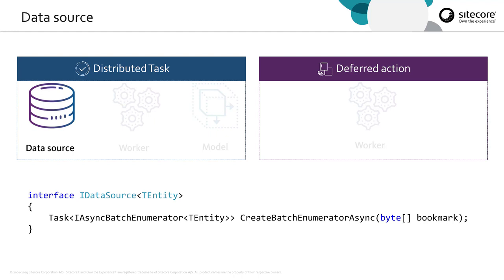Out of the box, we have four data sources that allow us to extract the data from XConnect. There is the contact data source, the interaction data source, and then we have search varieties of both of them. The search varieties allow us to execute a search query, so rather than returning all of the contacts or all of the interactions, we can filter them down to, for example, all of the contacts that have visited the site in the last week.